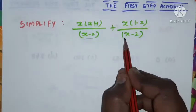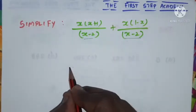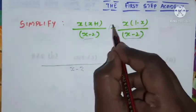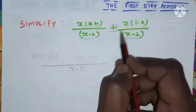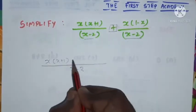So the denominator is common, hence I can write the denominator as common x minus 2. Hence I can do the operation called addition in the numerator, right? x into x plus 1 plus x into 1 minus x.